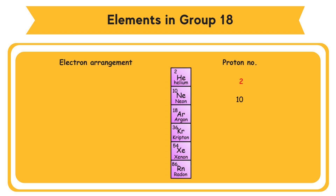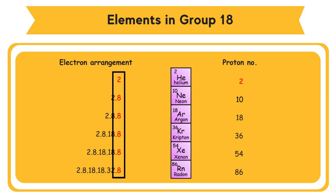The electron arrangement of Group 18 elements. Proton numbers: 2, 10, 18, 36, 54, 86. Electron arrangements: 2; 2.8; 2.8.8; 2.8.18.8; 2.8.18.18.8; 2.8.18.32.8. Number of valence electrons: 2, 8, 8, 8, 8, 8, 8.